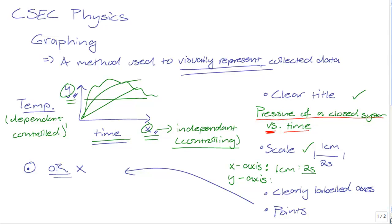Every graph is expected to have a clear title, a clear scale, and clearly labeled axes and points. Points are plotted using either a dot in a circle or a cross, not too large, not too small.